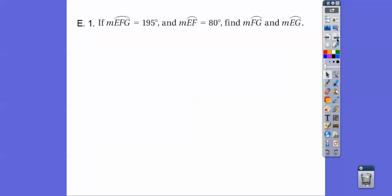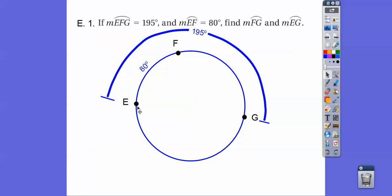Here we have a circle. If the measure of arc EFG is 195 degrees and the measure of arc EF is 80, find the measure of arc FD and EH. Well, let's draw a picture right there. Here's EFG right there. It says it's 195, so it's over half the circle. And then it says EF is 80. You're going to see a question just like that. And you're going to have to be able to draw that picture. So find FG. It's going to be 195 minus 80 right there. So, we get 115. Find EG. EG is down here. So, it's the rest of the circle. So, it's 360 minus the 195 and we get 165. Easy enough.